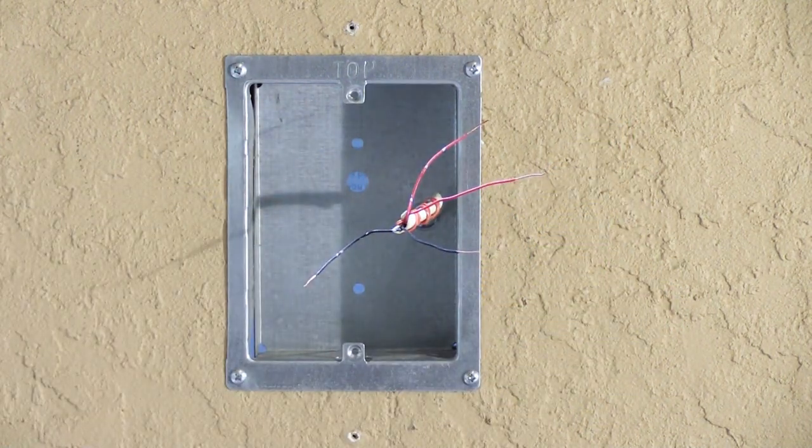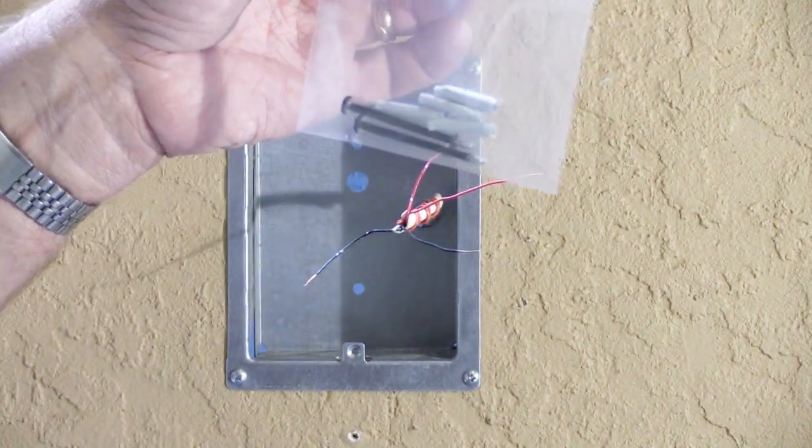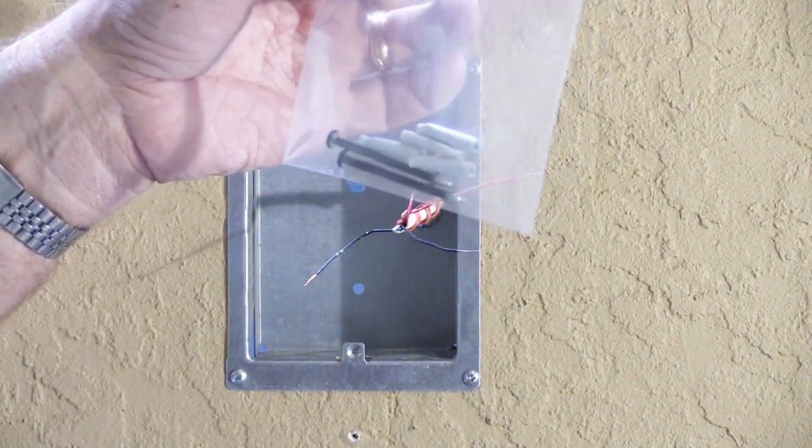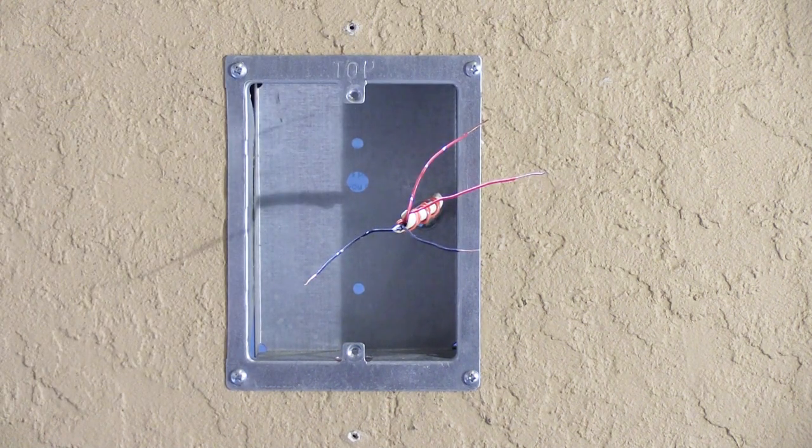When you get the refinished speaker from us, you get a little installation bag. It contains two mounting screws and four little crimp connectors. We call them beam connectors because in the business, that's what they're referred to as.